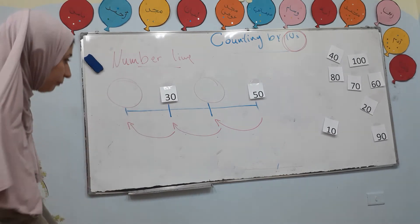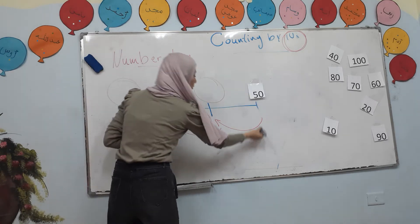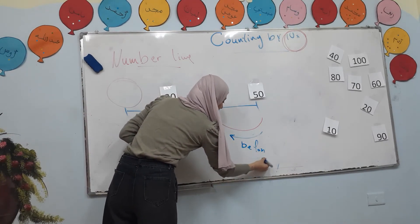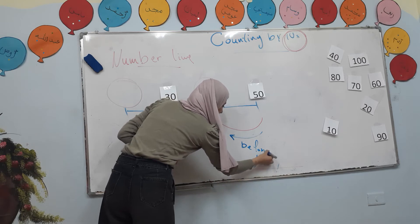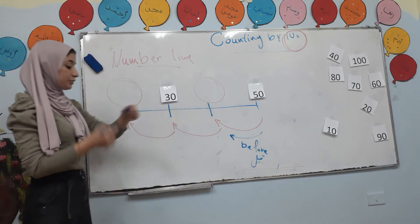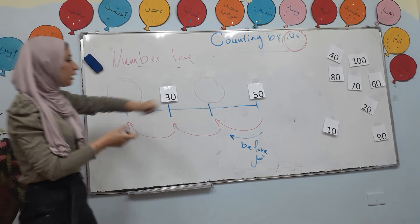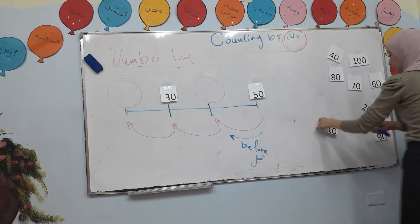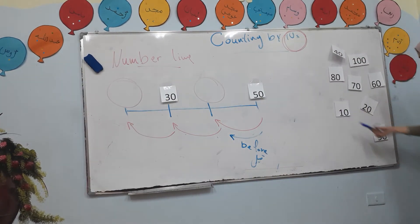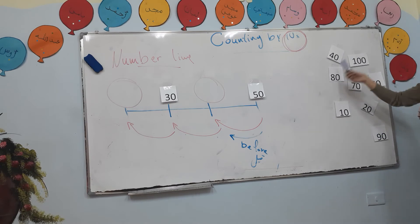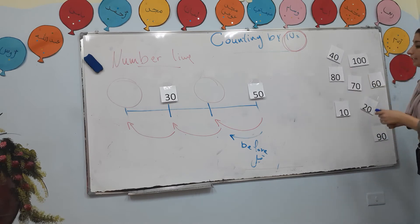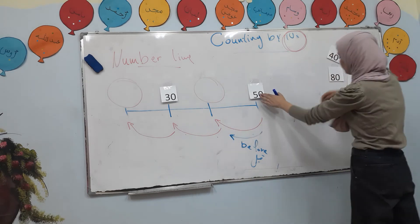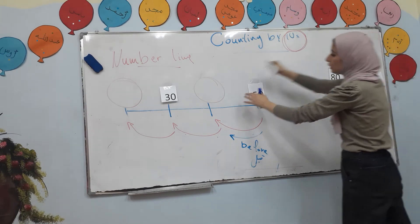What's the number that comes before? Before. The number come before 50. Yes, it's 40! Good job.